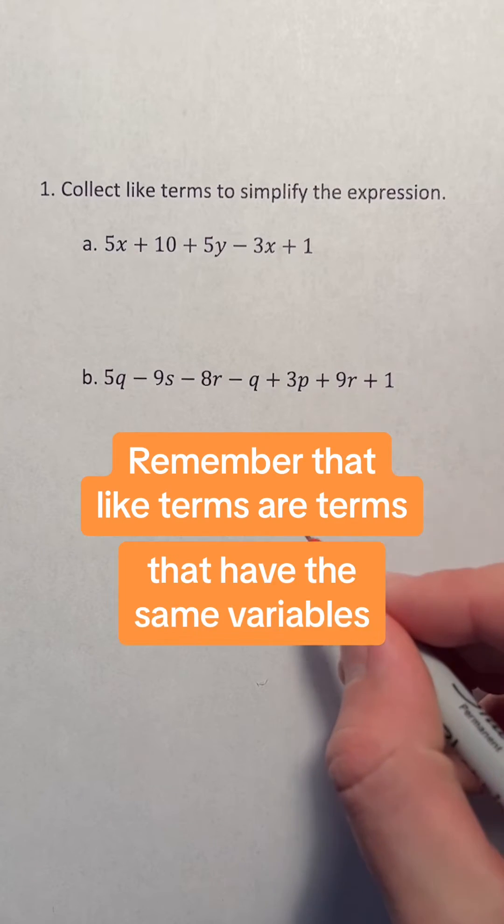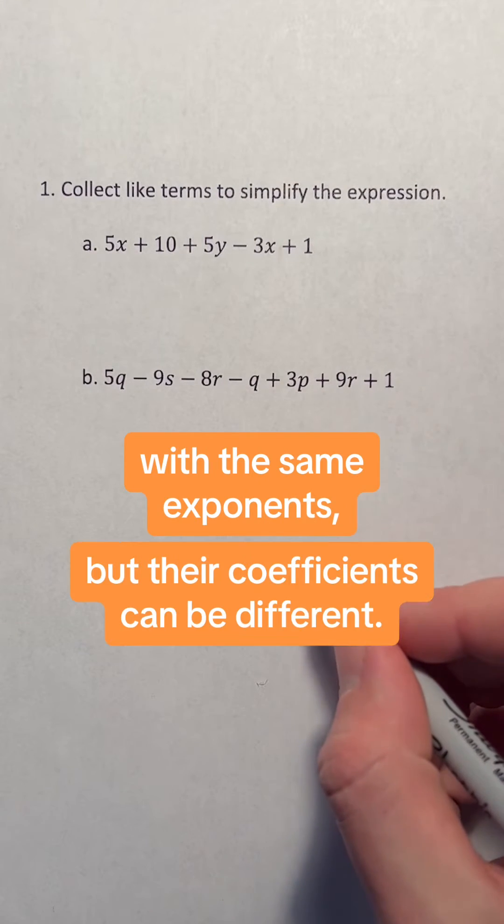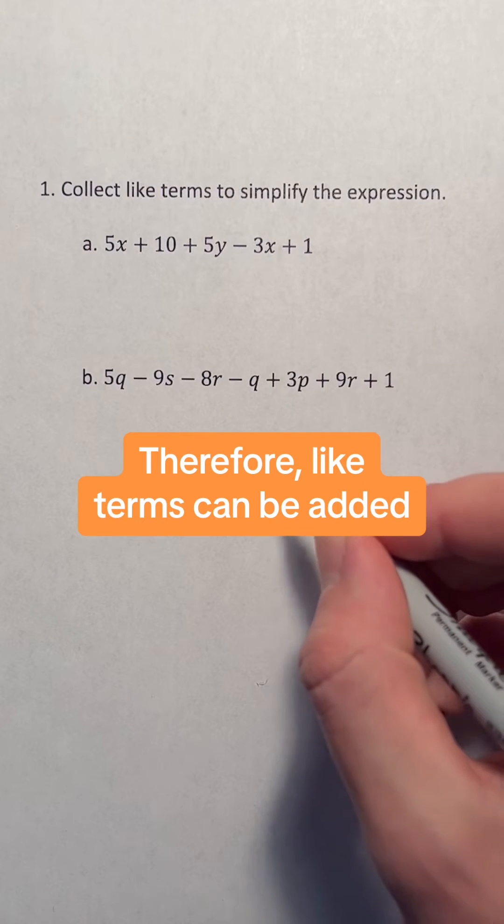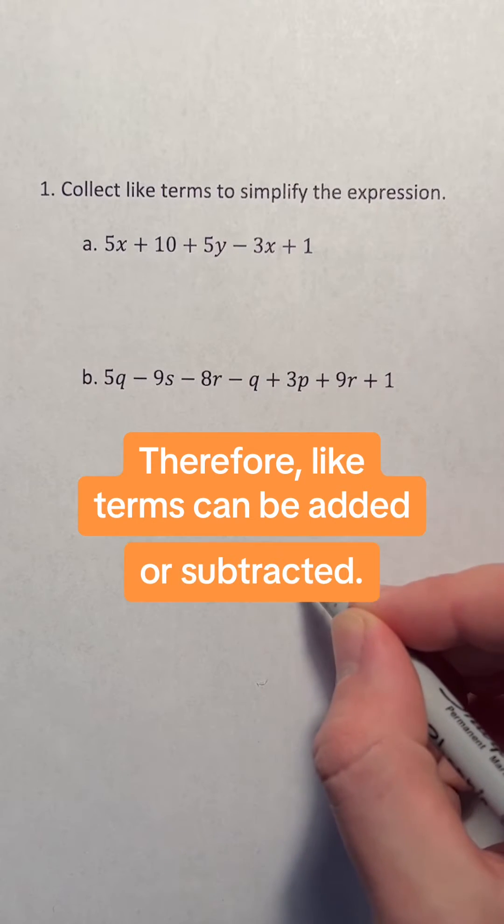Remember that like terms are terms that have the same variables with the same exponents, but their coefficients can be different. Therefore, like terms can be added or subtracted.